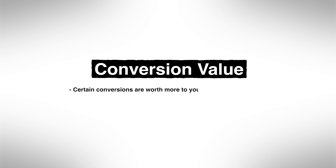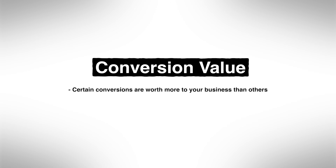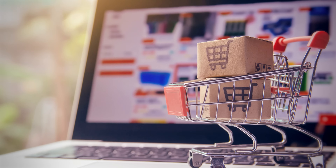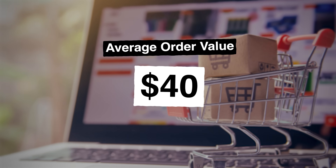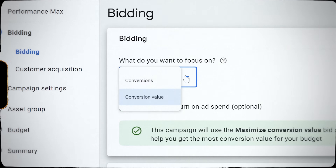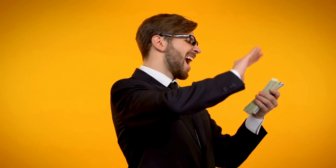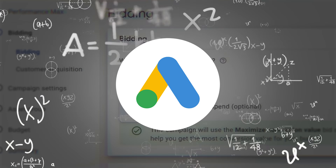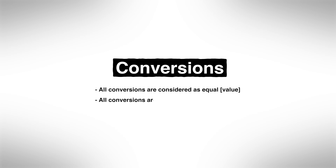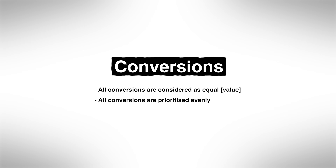To quickly explain the difference between the two: conversion value identifies that certain conversions are worth more to your business than others, and actively pursues the ones that are worth more. For example, if you're an e-commerce business and your average order value is $40, but some people spend $80 and some spend $20 — by maximizing for conversion value, Google is going to try and get you more of the $80 conversions. Conversions, on the other hand, treats every single one of those purchases as the same, and therefore does not prioritize the more valuable conversions.